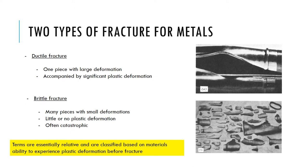The problem with brittle fracture is that it's often catastrophic. If a ship or plane fractures in a brittle manner, it really does blow up into thousands of pieces - giving the person in charge absolutely no time to deal with the situation. The terms ductile and brittle are essentially relative and are classified entirely based on the material's ability to experience plastic deformation before fracture.